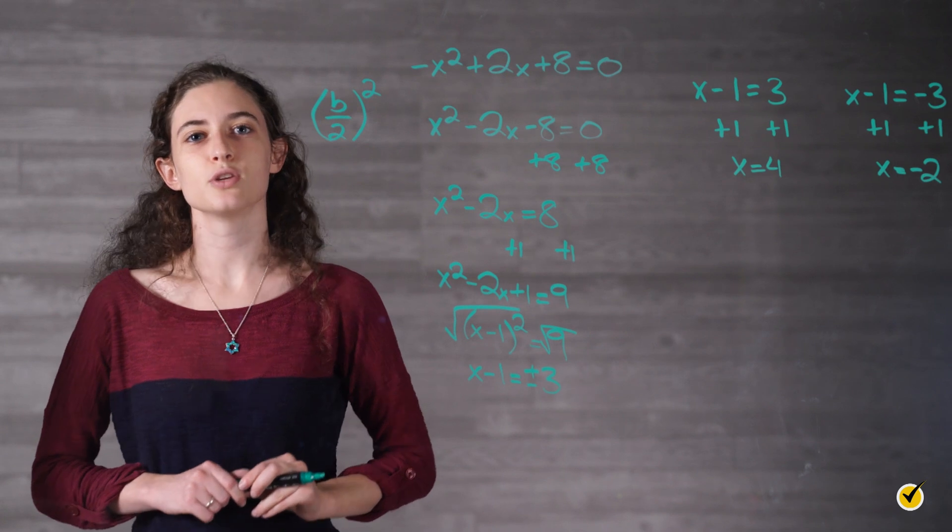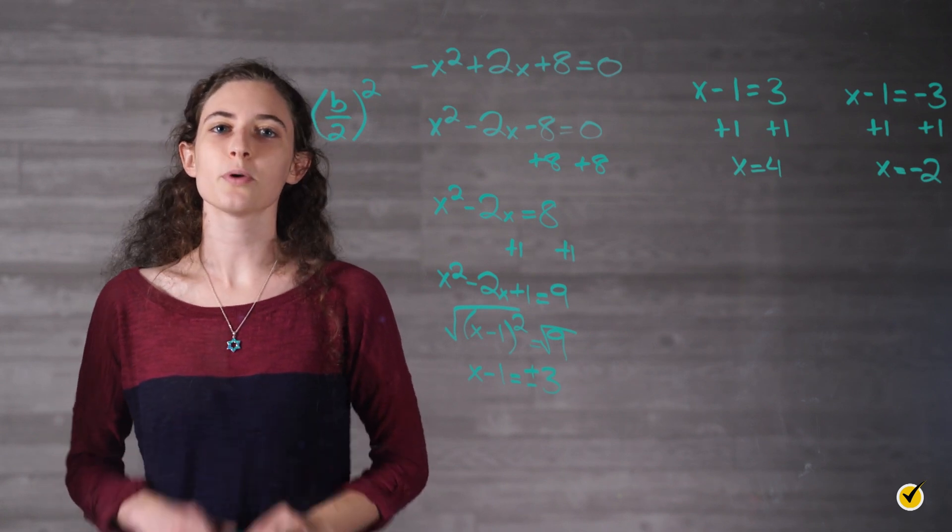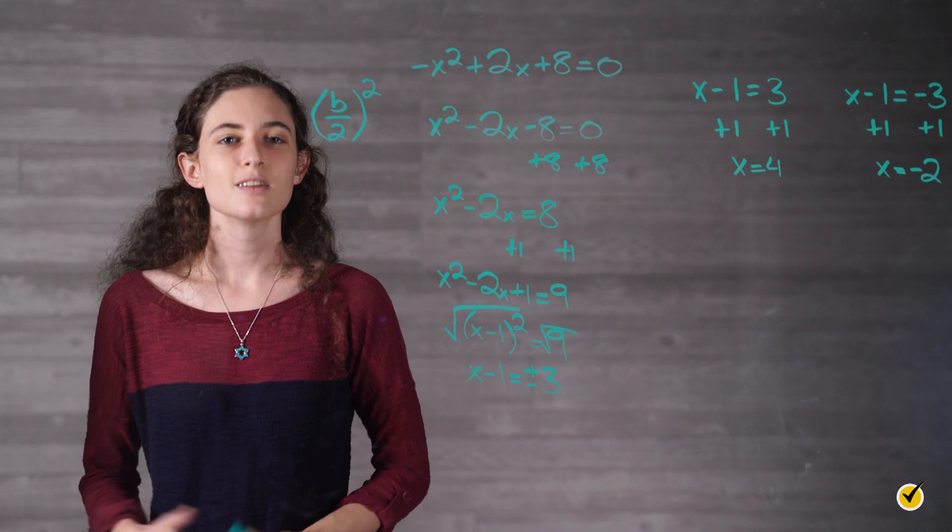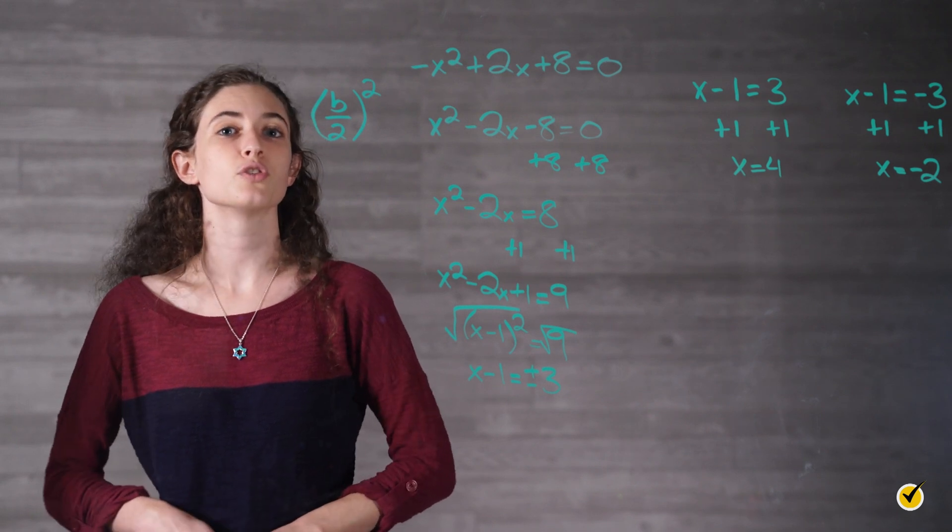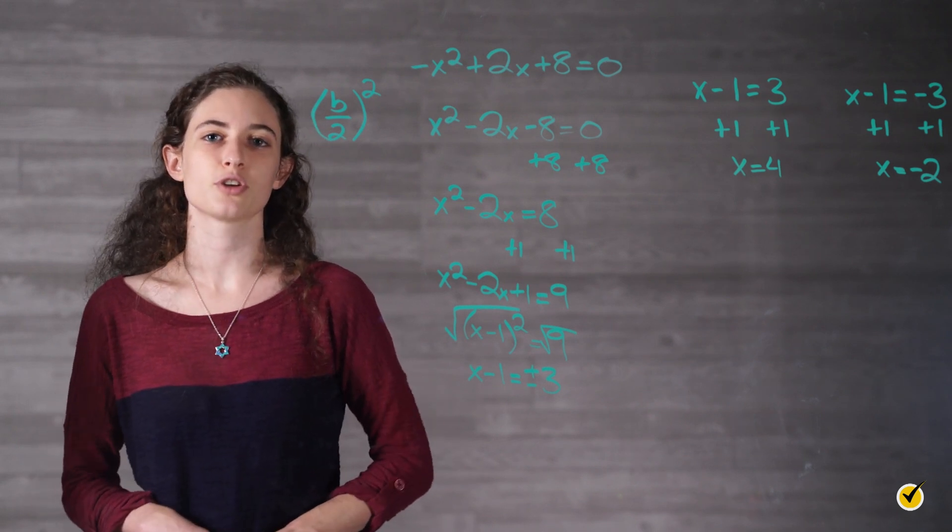Completing the square can be used with any quadratic equation, but if you start with a perfect square and don't realize it, the equation will look the same after you use this method as it did when you started. There is one last method for us to examine.